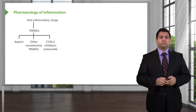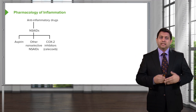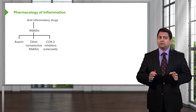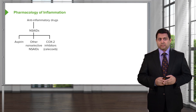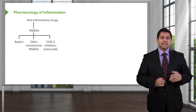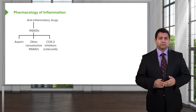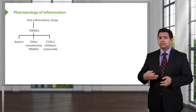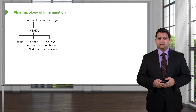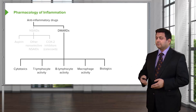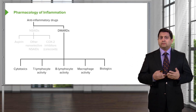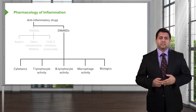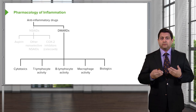You managed to get through a three-month pharmacology of inflammation lecture in five minutes. Let's move on to a specific group of anti-inflammatory agents called non-steroidal anti-inflammatory agents — NSAIDs — which work through the cyclooxygenase pathway. These include aspirin, non-selective NSAIDs like ibuprofen (commonly sold as Advil), and specific cyclooxygenase type 2 inhibitors like celecoxib. We also have DMARDs — disease-modifying anti-rheumatic drugs — which can be cytotoxic, work on T-lymphocyte, B-lymphocyte, or macrophage activity, or be biologics.